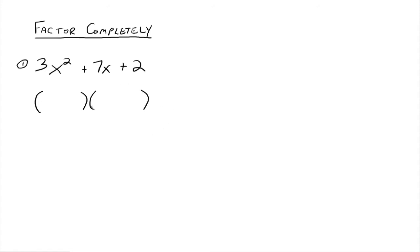We're going to put in two terms in each binomial. Recalling how you multiply two binomials together: the first term in the left binomial and the first term in the right binomial have to multiply up to 3x squared. So what are the options? You could have 3x here and x here, because 3x times x is 3x squared.